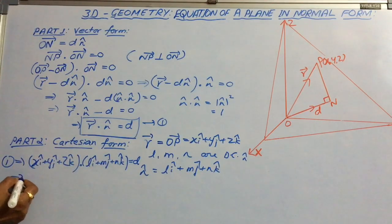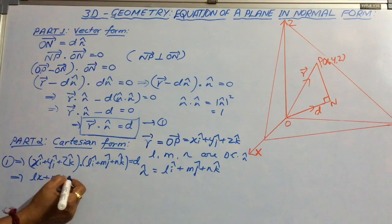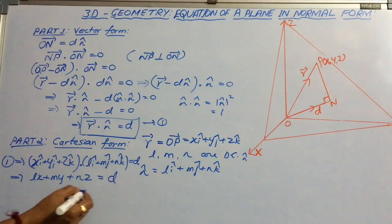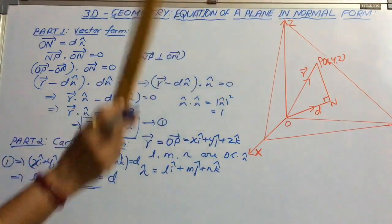So if we consider the dot product, we will get lx plus my plus nz equal to d. And this is the Cartesian equation of the plane in normal form.